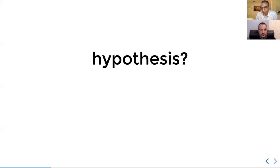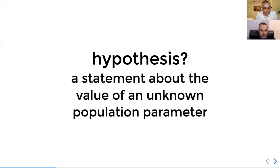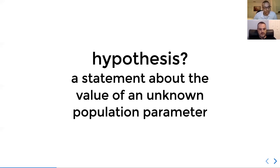That's basically what they say — it's a statement about the value of an unknown population parameter. We don't know if there's discrimination in the population; we have a sample and we have to make an inference from that.